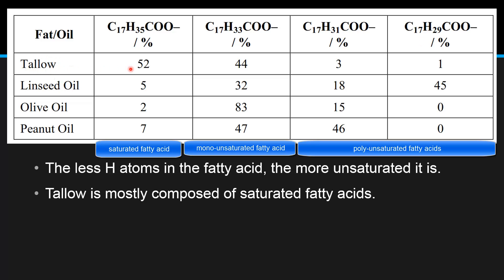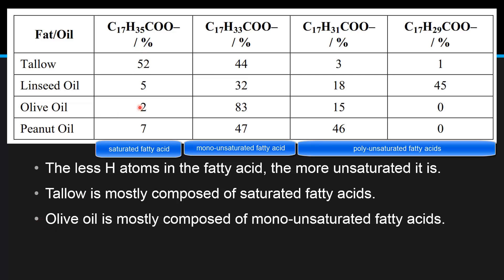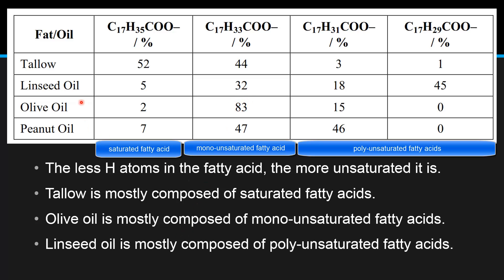Starting with tallow, we can see that 52 percent of it is composed of saturated fatty acids. Olive oil is mainly composed of monounsaturated fatty acids. Linseed oil is composed mainly of polyunsaturated fatty acids — 18 percent from one polyunsaturated fatty acid and 45 percent from another. Finally, peanut oil is composed of 47 percent monounsaturated fatty acids and 46 percent polyunsaturated fatty acids.